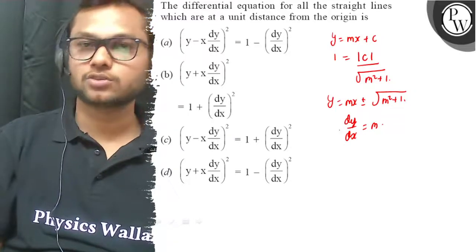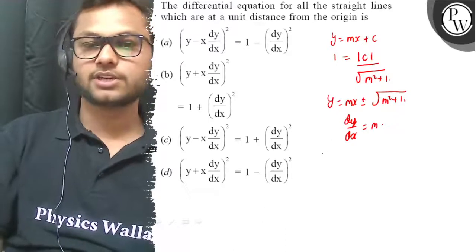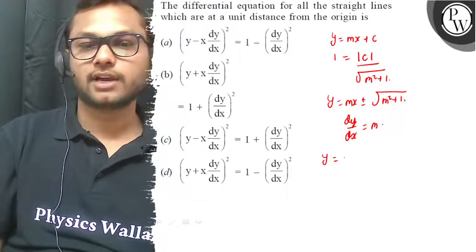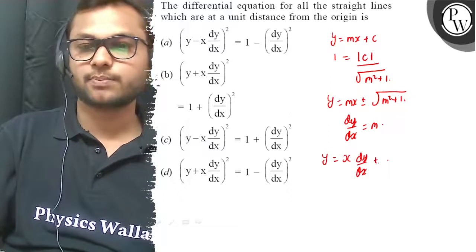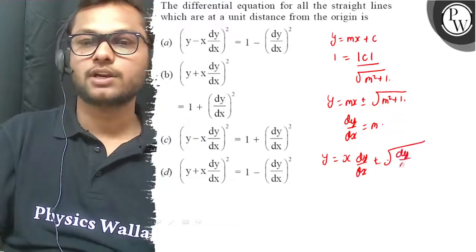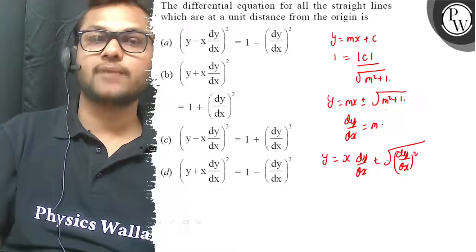So this is the slope of a line. Now if we see forward, the y equals to x dy by dx plus plus minus square root of dy by dx whole square. M equals to dy by dx, so dy by dx whole square plus 1.